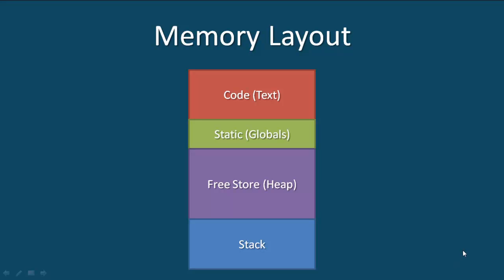If you remember from the video on scope, lifetime, and call stack, we had a diagram showing the memory layout. Any time we compile a program, the compiler sets aside certain areas of memory. One area is for our instructions, called the code or text area. Another is for global variables, called the static or globals area. And then there's an area for local variables, return values, and return addresses from each function call — that's the stack.